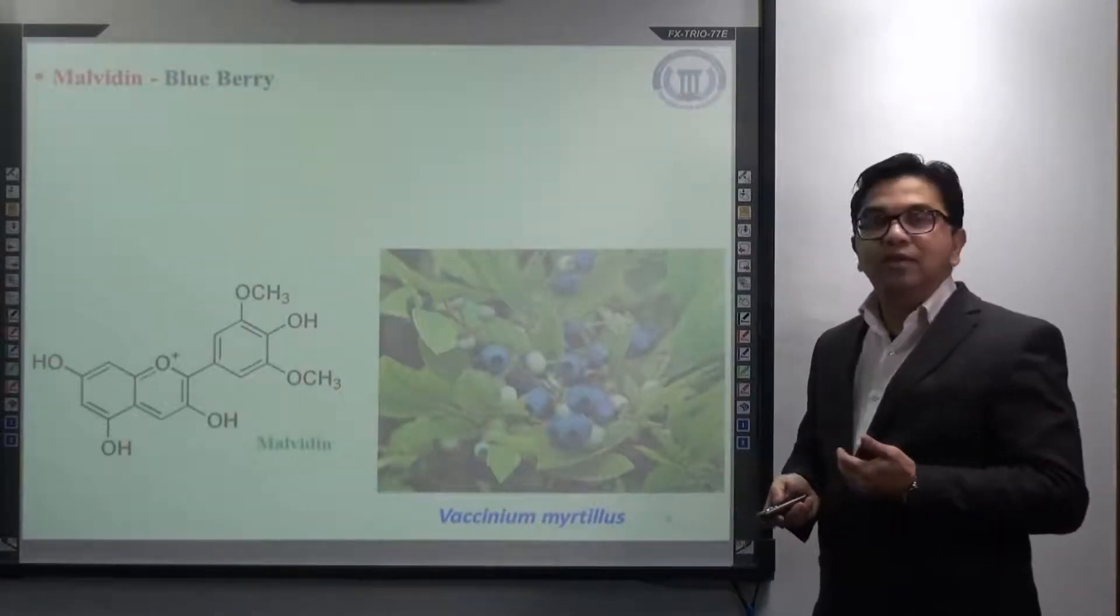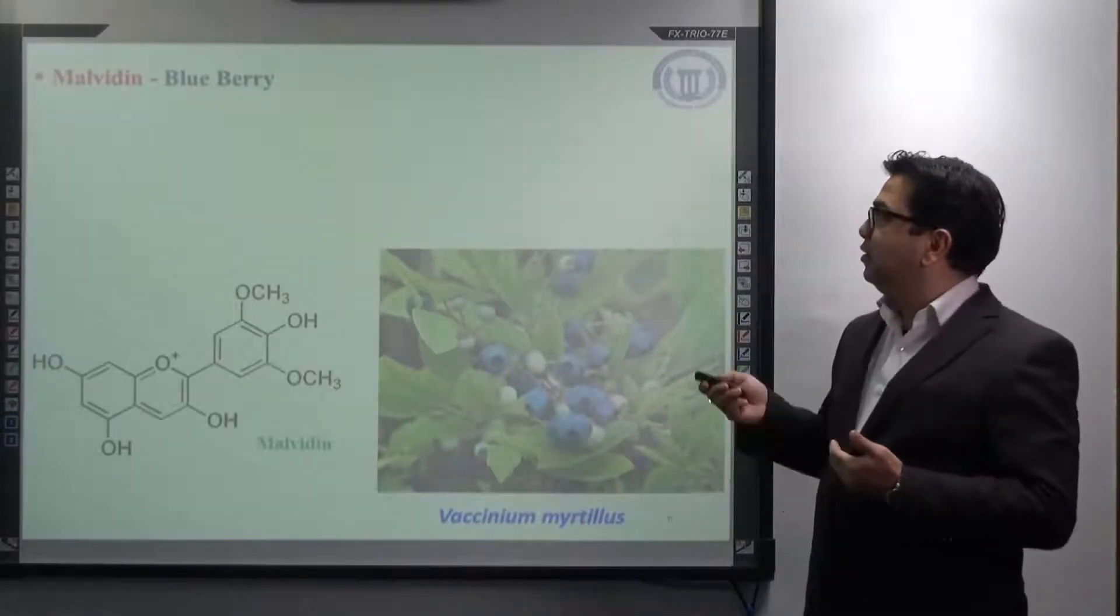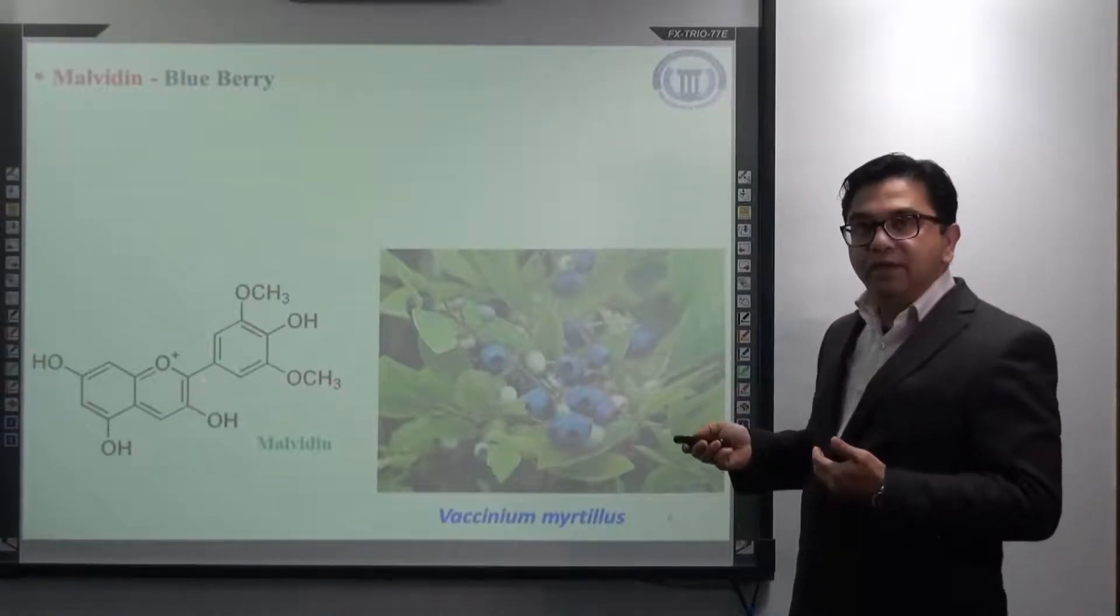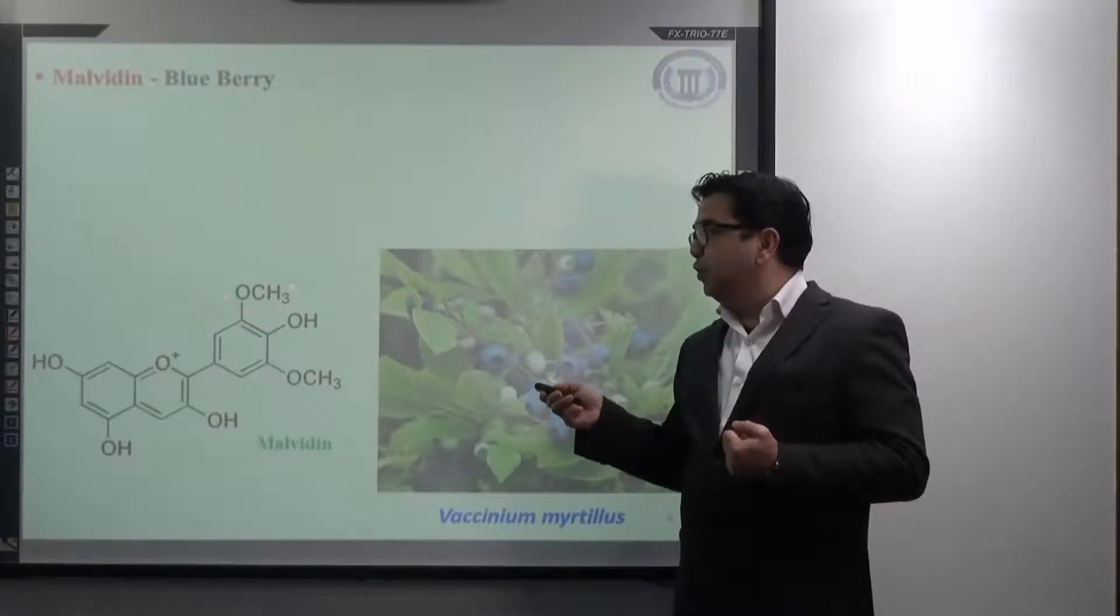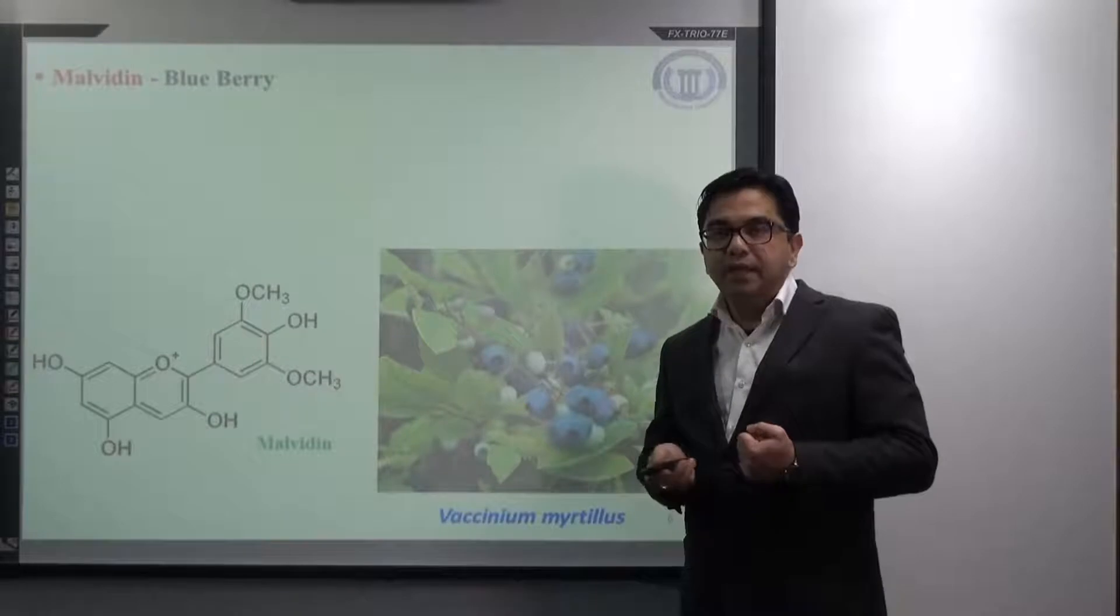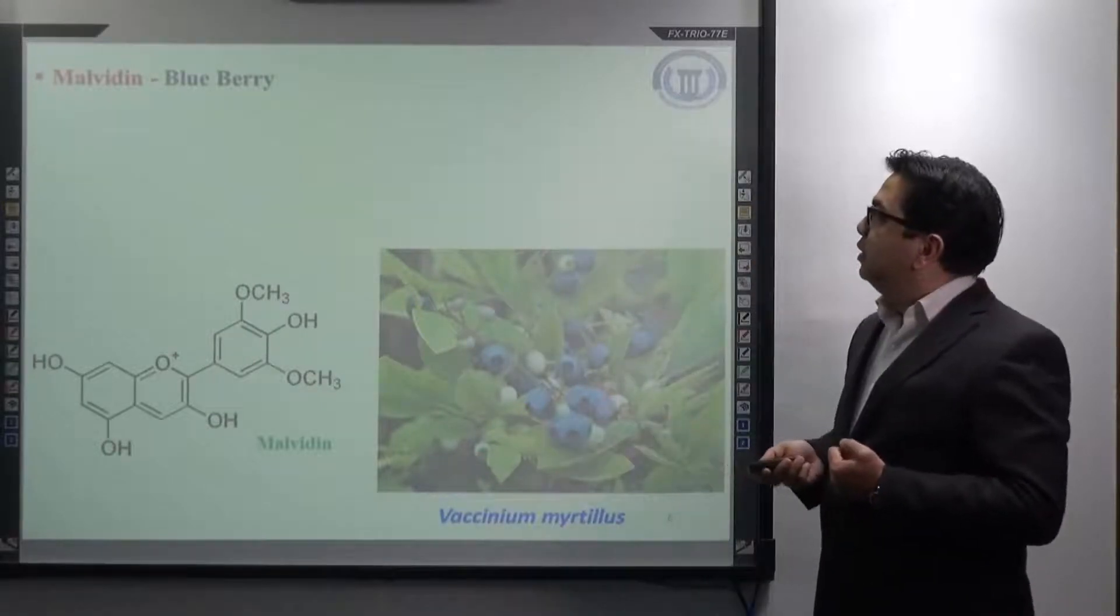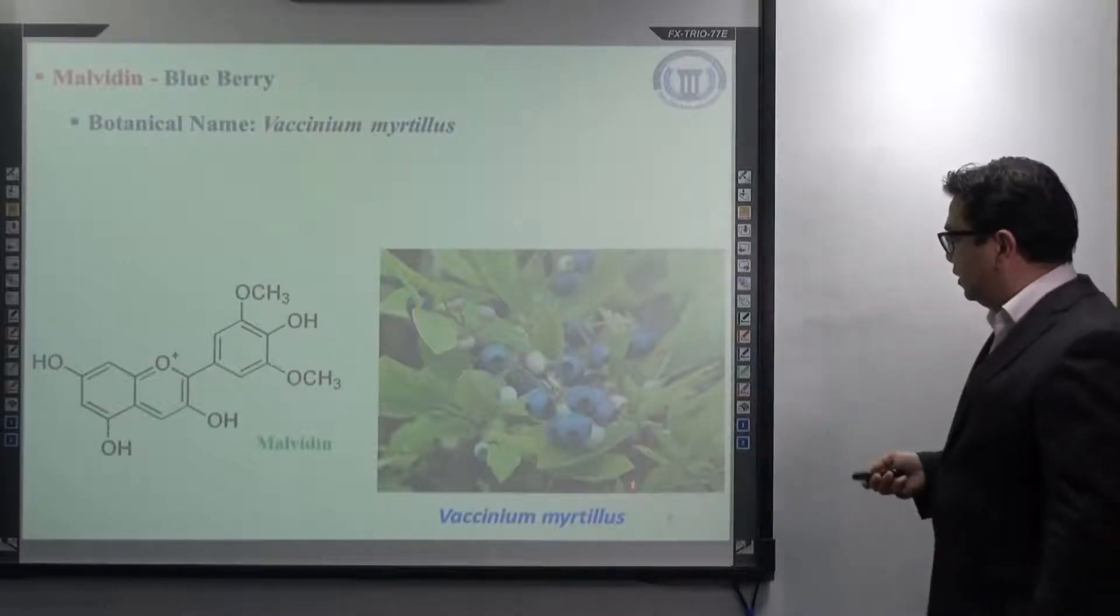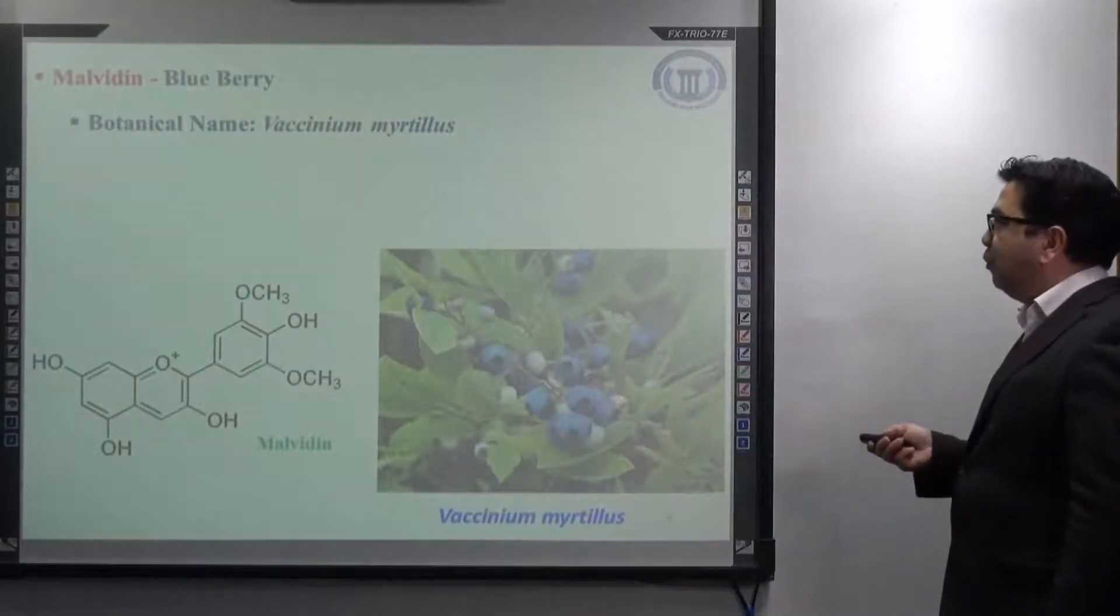Next one is malvidin which is mainly available in blueberries. The structure of malvidin contains two methoxy groups in the third and fifth position of ring B. Its botanical name is Vaccinium myrtillus. This is the botanical name of blueberry.